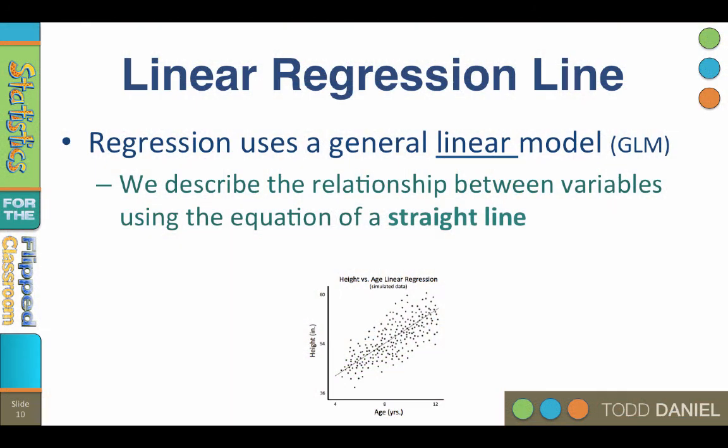Regression uses the general linear model, GLM, meaning that we describe the relationship between variables using the model of a straight line. We create a scatter plot of the related data, and then we use a formula to describe the line that best fits among those data points.